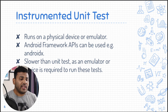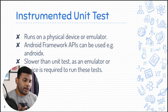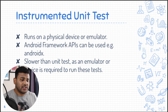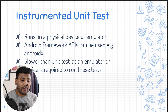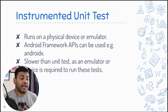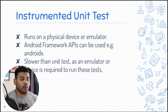After local unit tests, we have instrumented unit tests, because some of our modules may be dependent on Android APIs — for example, Context, which is often required. To test these modules we create instrumented unit tests. In instrumented unit tests we can use Android APIs, but because Android APIs are needed, a physical device or emulator is also required, which is why instrumented unit tests are slower than local unit tests.